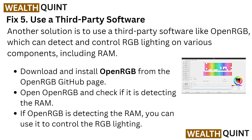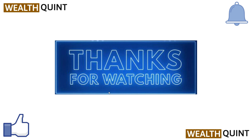If updating your drivers did not resolve the problem, solution 5 is to use third-party software. You can use OpenRGB, which can detect and control RGB lighting on various components including RAM. Download and install OpenRGB from the OpenRGB GitHub page, then open it and check if it is detecting your RAM. If it is, you can use OpenRGB to control your RGB lighting. These are the solutions to tackle the problem of RGB Fusion not detecting RAM. Thank you for watching — I hope you liked it, and we'll catch you in the next video.